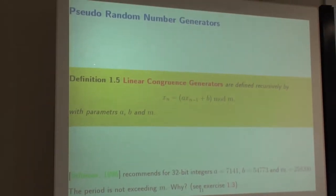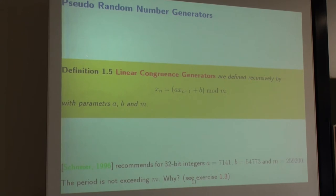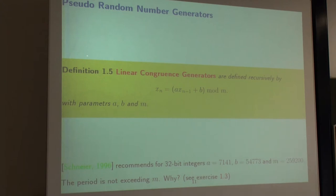Now let's get into pseudo-random number generators. That's important for any random number applications. We want to generate random numbers on the computer — on our digital computer — and that means deterministic algorithms. We already saw that it's impossible with a deterministic algorithm to produce real random numbers. We will now go into the details of how we can generate something that looks like random numbers, and we will also see that what such programs output can never be truly random.